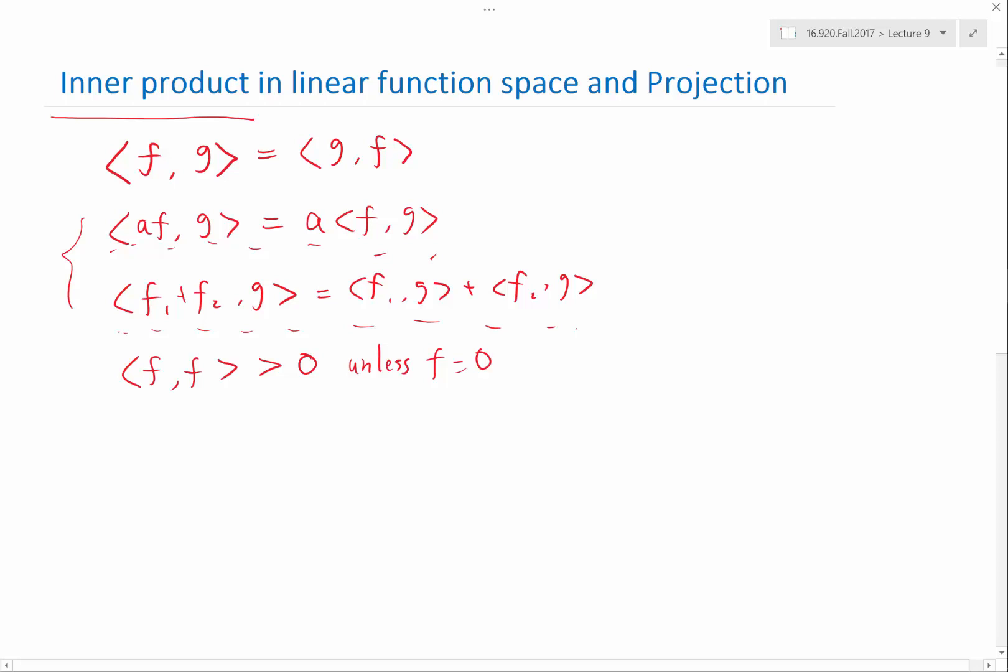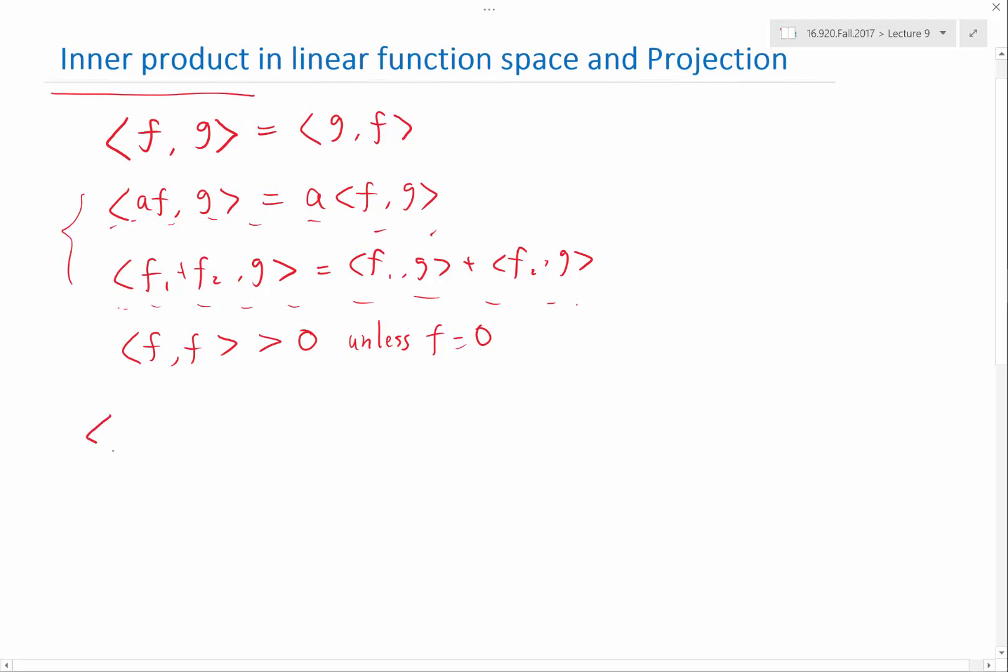And in finite element, one of the most commonly used inner product is called the L2 inner product. This is basically a generalization of the Euclidean distance or the Euclidean inner product from a vector space into function space. So f and g called L2 is defined as, you can show it all satisfies all these properties. First of all, you have to define a domain, let's say omega. In 1D, that's just an interval. f times g dx. You just integrate the product of function over whatever space it is defined.